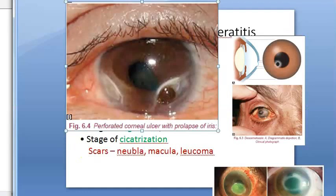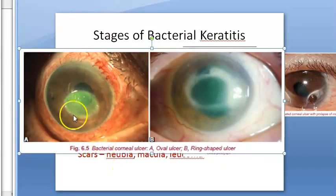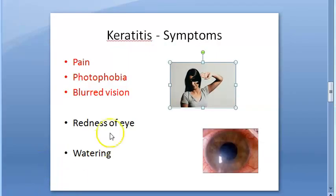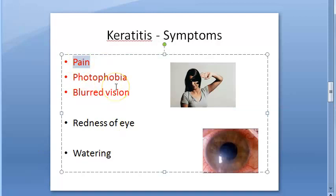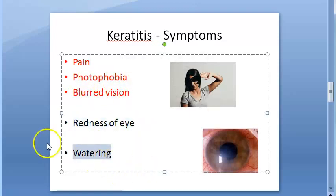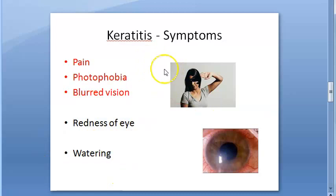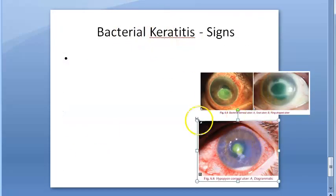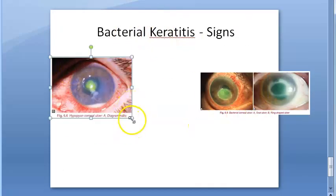Here you can see a perforated corneal ulcer with prolapse of the iris, and bacterial corneal ulcer showing oval and ring-shaped ulcers. These patients will have pain, foreign body sensation, affected vision, photophobia, redness, and watering of the eye — all important symptoms to note.